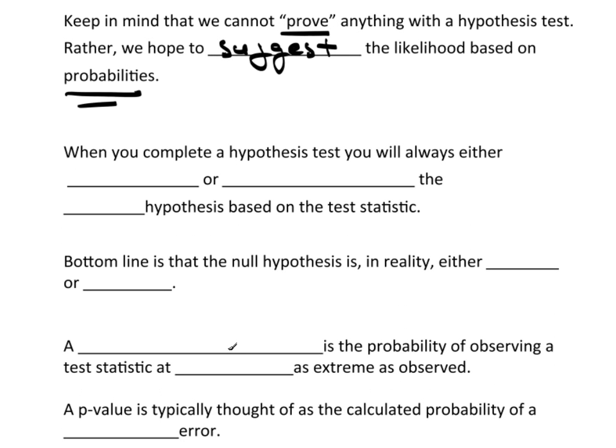When you complete a hypothesis test, you will always either reject or fail to reject the null hypothesis. Always. You will ultimately reject the null hypothesis in favor of the alternative being more likely, or you will fail to reject the null hypothesis, which says you can't suggest the alternative is more likely.